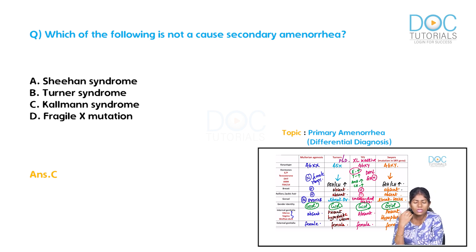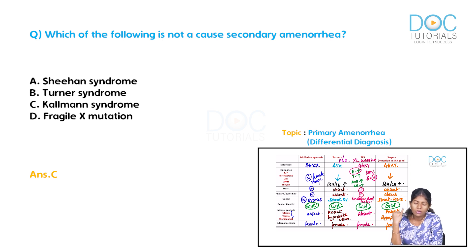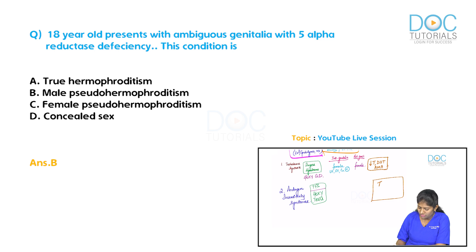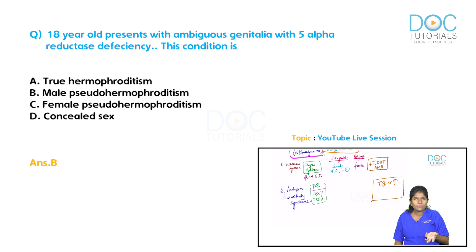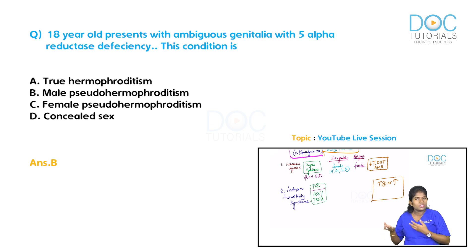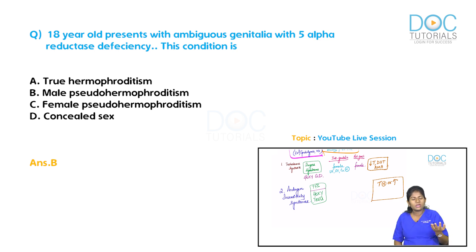Knowing this table of primary amenorrhea causes — Mullerian agenesis, Turner's, testicular feminization syndrome (TFS), and MRKH — allows you to solve many questions from AIIMS, PGI, JIPMER exams. In testicular feminization syndrome, testosterone is either normal or elevated because the problem is not with synthesis but with peripheral androgen receptor action. As with insulin resistance in type 2 diabetes causing hyperinsulinemia, androgen resistance causes the pituitary to secrete more LH, raising testosterone levels.